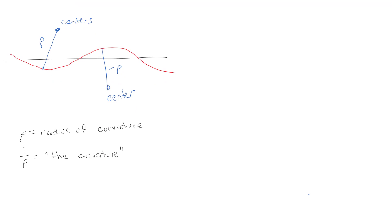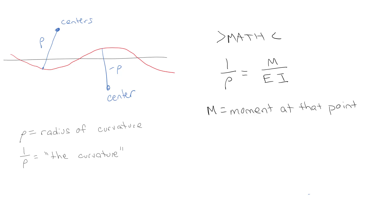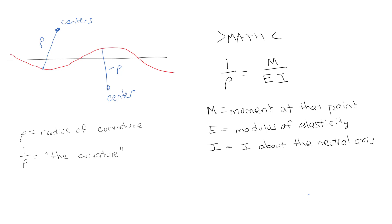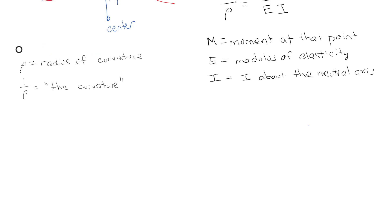We can prove that the curvature is equal to M over EI, where M is the moment at that point, E is the modulus of elasticity, and I is the moment of inertia about the neutral axis. Now where this gets interesting is combining that with something from dynamics or calculus: the curvature of a curve defined by v(x) is equal to (d²v/dx²) divided by (1 + (dv/dx)²) to the three-halves power.